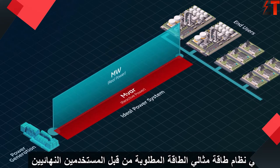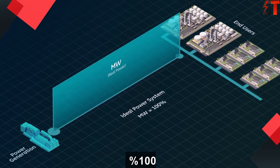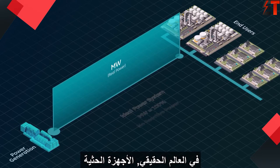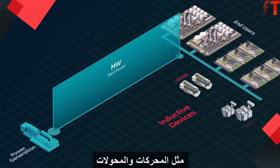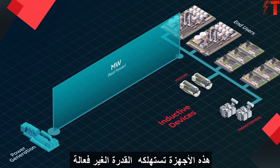In an ideal power system, the power required by the end users — the megawatts — makes up 100% of the generated power, and little to no reactive power is required. In the real world, however, inductive devices such as motors and transformers exist on the system, and these devices consume reactive power.